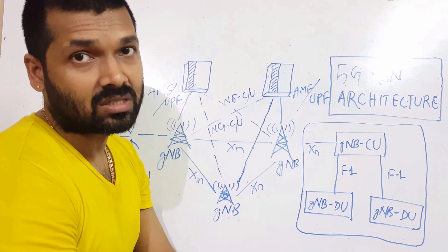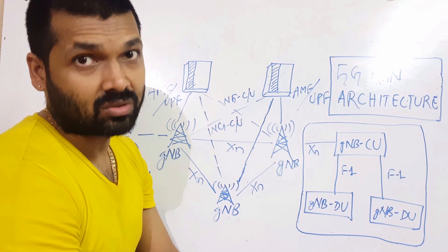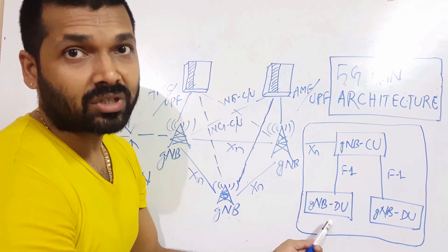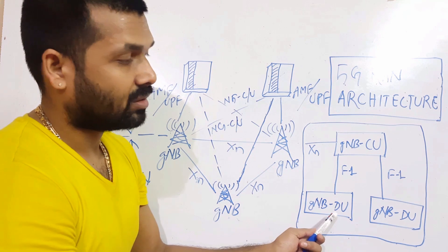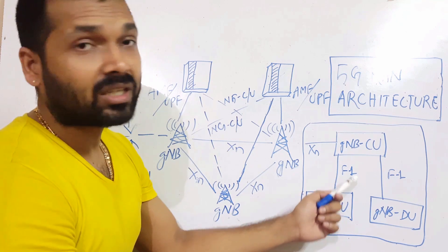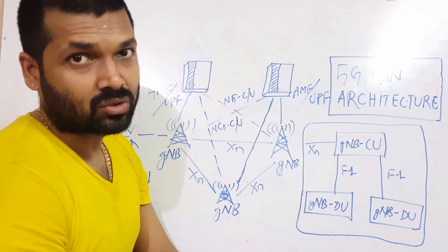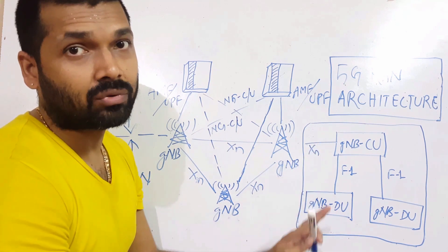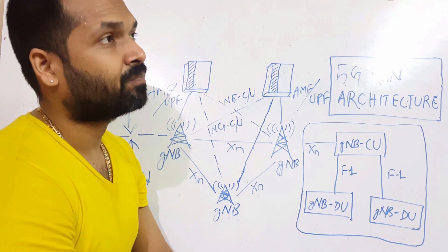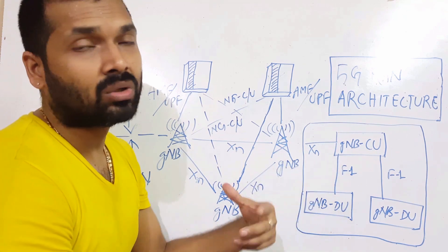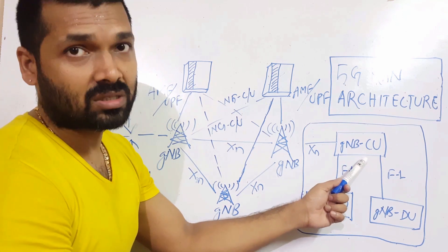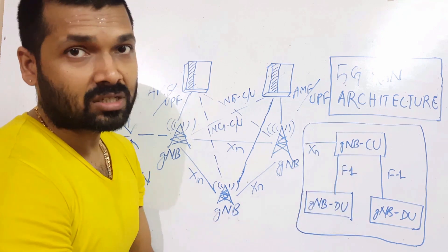The higher-layer protocols like PDCP and RRC are terminated at the CU. The gNodeB-DU is connected to the CU via the F1 interface, which has two variants: F1-U for user plane data transfer and F1-C for control plane or signaling information transfer.